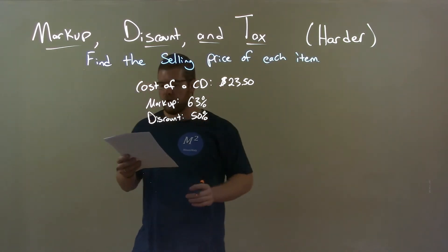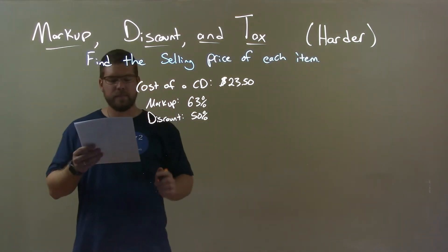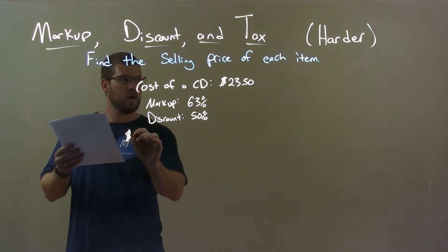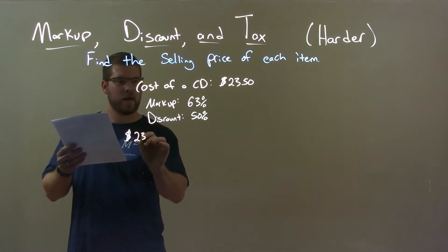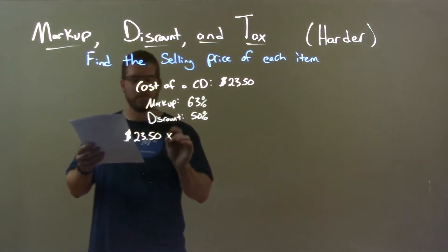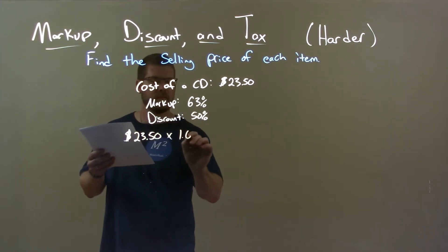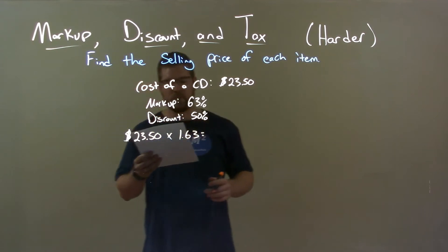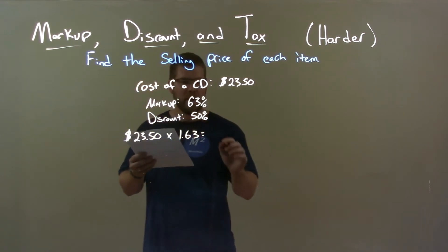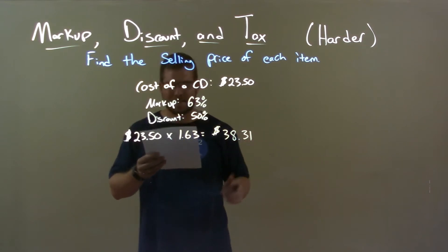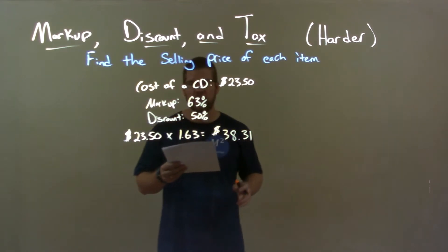Well, first we start with the cost of the CD. We take that cost of $23.50 and we're going to multiply that by 1.63 — that shows our 63% markup. That gives us a value of $38.31.